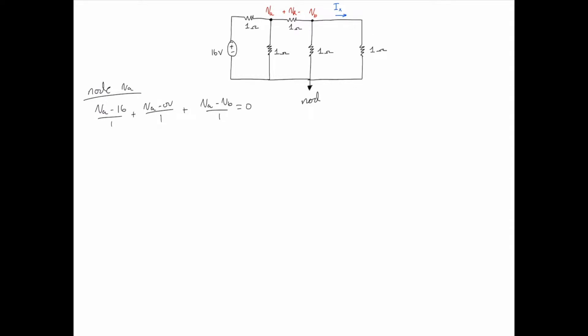At node VB: (VB - VA)/1Ω + (VB - 0V)/1Ω + (VB - 0V)/1Ω = 0. So that is KCL at VA and VB.